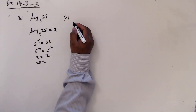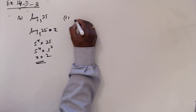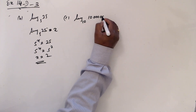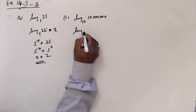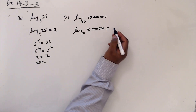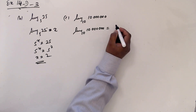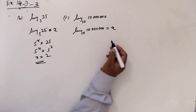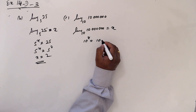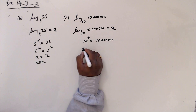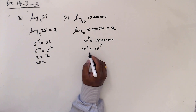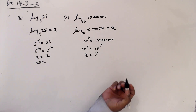And c: log base 10 of 10 million equals x — missing is the power, x. 10 to the power x is 10,000,000. 10 to the power x is 10 to the power 7. Then x has to be 7.